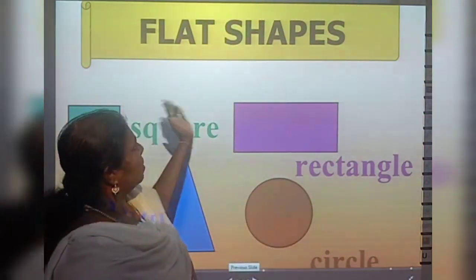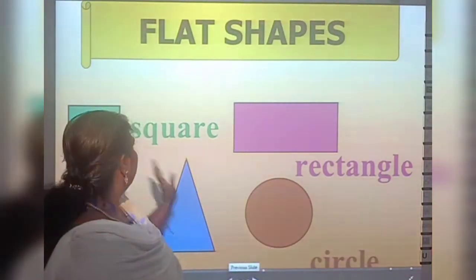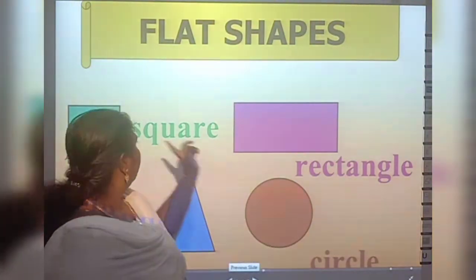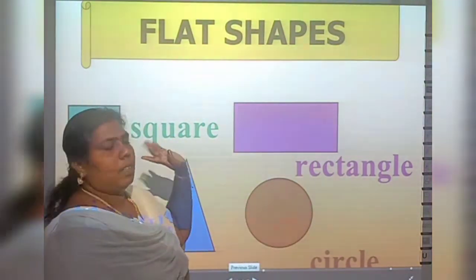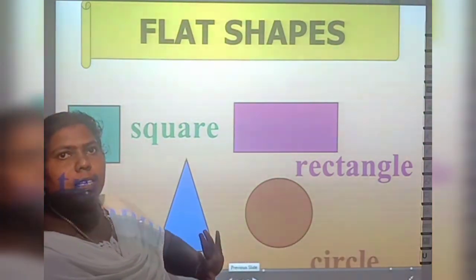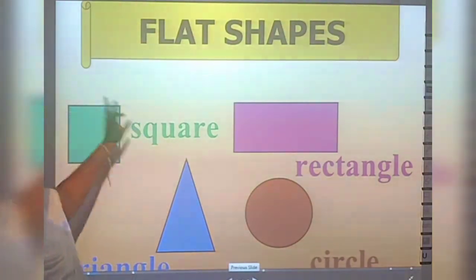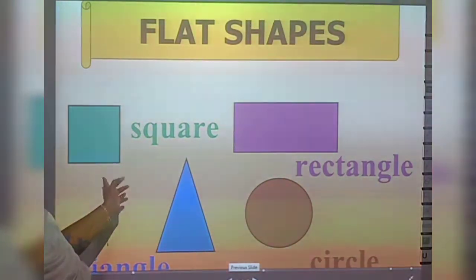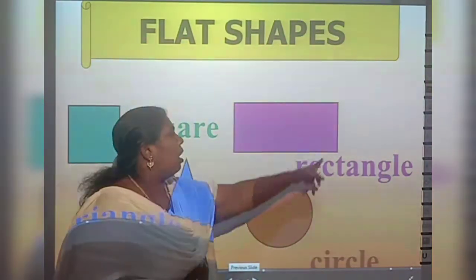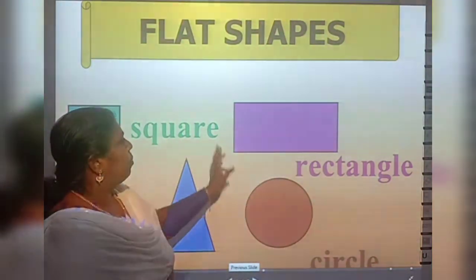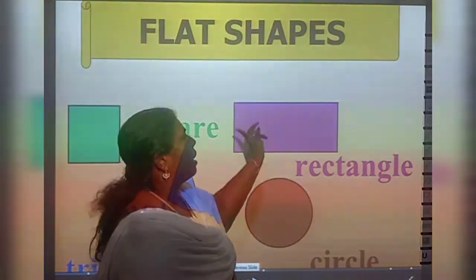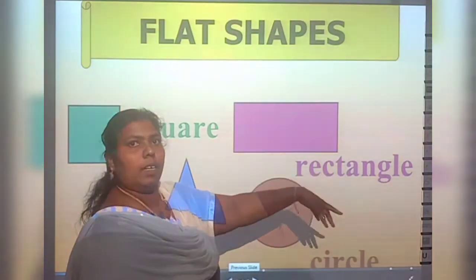These shapes are flat shapes. Square, rectangle, triangle and circle. The square has four sides and four corners, and all sides are equal. Rectangle has four sides and four corners, but two long sides and two short sides — that means opposite sides are equal.